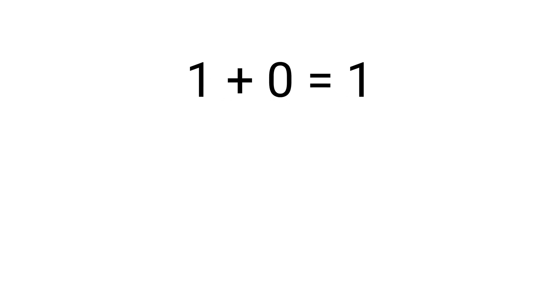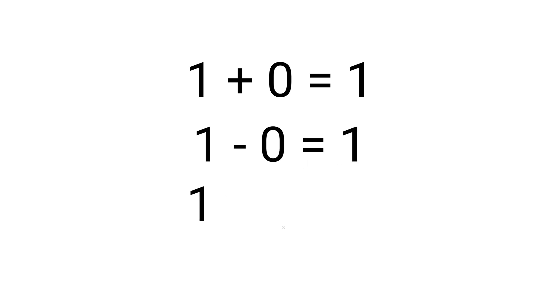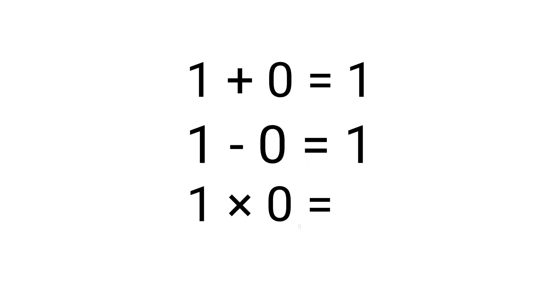For example, if you add 4 zeros after 2, it forms 20,000. Same way, if you add 0 to 1, it gives you 1. If you subtract 0 from 1, it gives you 1. But when you multiply 0 with 1, you get 0.